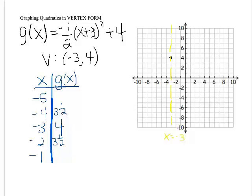If I substitute a negative 5, negative 5 plus 3 is negative 2. The square root is 4. Times negative 1 half is negative 2. Plus 4 is 2.